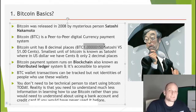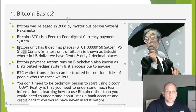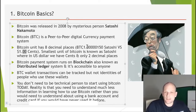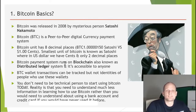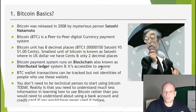Bitcoin has eight decimal places and the smallest parts are called Satoshis. In dollars we have only two decimal places with 100 cents, while in Bitcoin we have 100 million Satoshis.